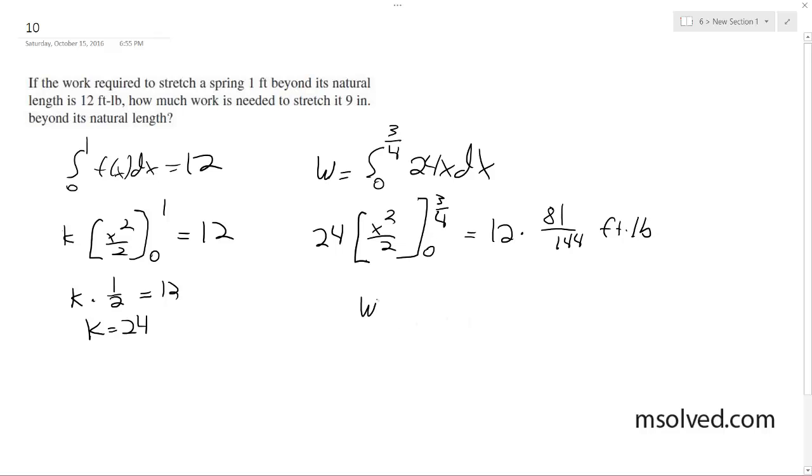Work's going to be equal to 81 over 12. This goes to 12, that goes to 0, or 1. Which is equal to 27 over 4. So roughly 6.75 foot-pounds.